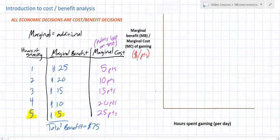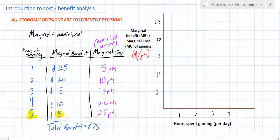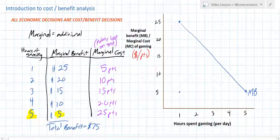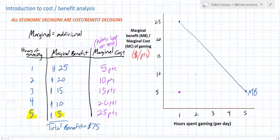I'll put my values on the vertical axis — marginal benefits and marginal costs — going from 5 to 10 to 15 to 20 to 25. On the horizontal axis, I'll put the hours spent gaming from 1 to 5. The marginal benefit curve, plotted in blue, goes from $25 at hour one down to $5 at hour five — a downward-sloping curve. The marginal cost, plotted in purple, starts at five points for the first hour and increases to 25 points for the fifth hour — giving us an upward-sloping marginal cost curve.